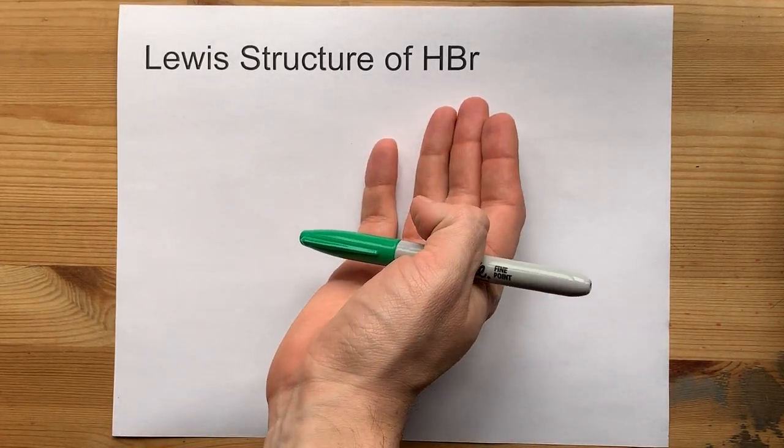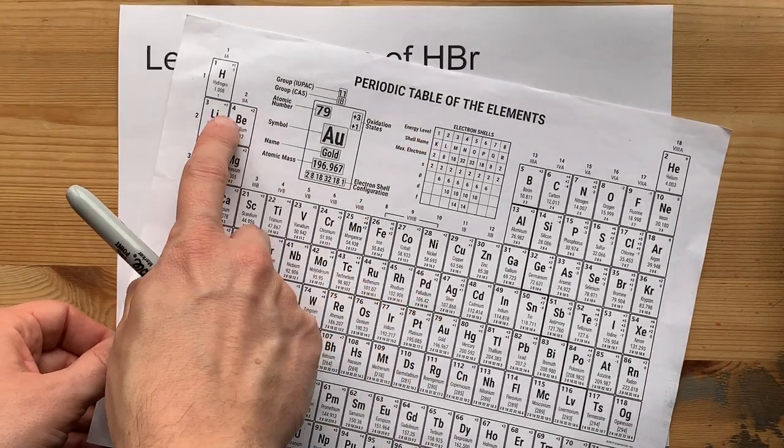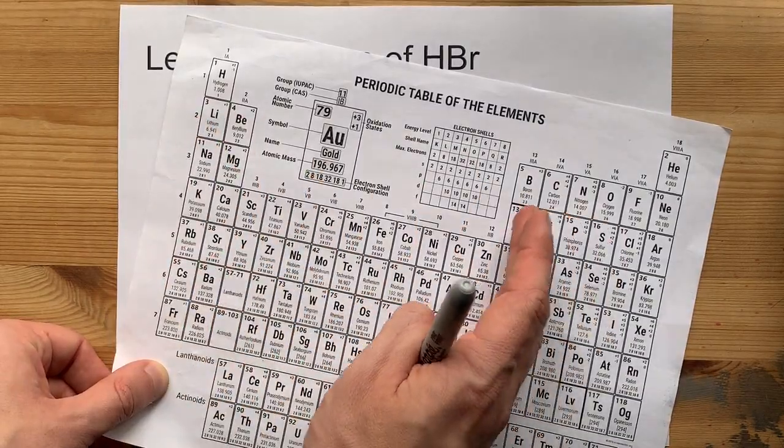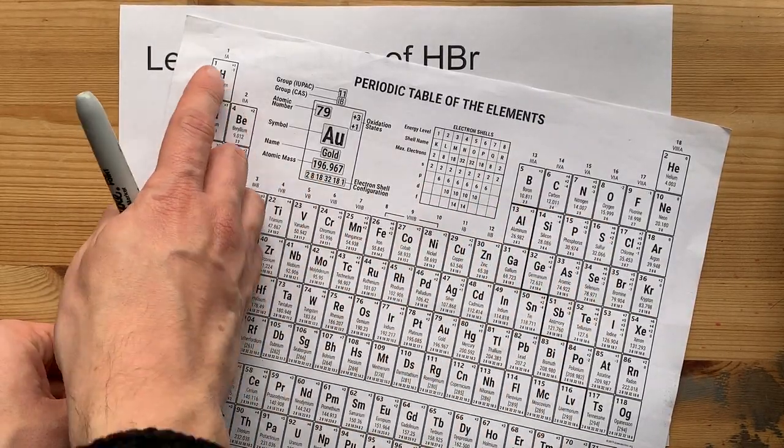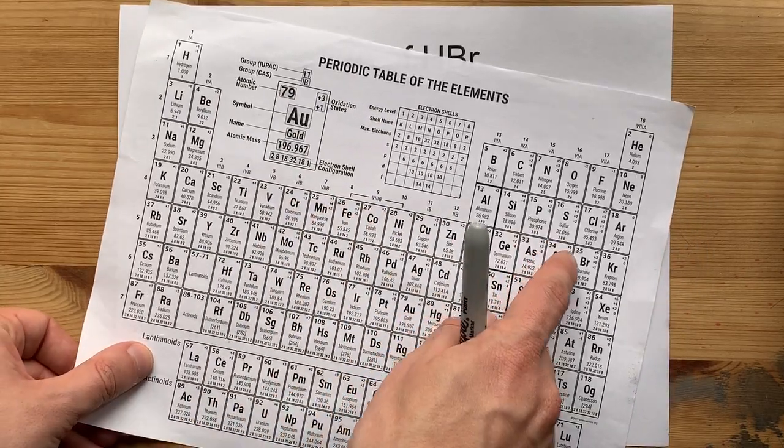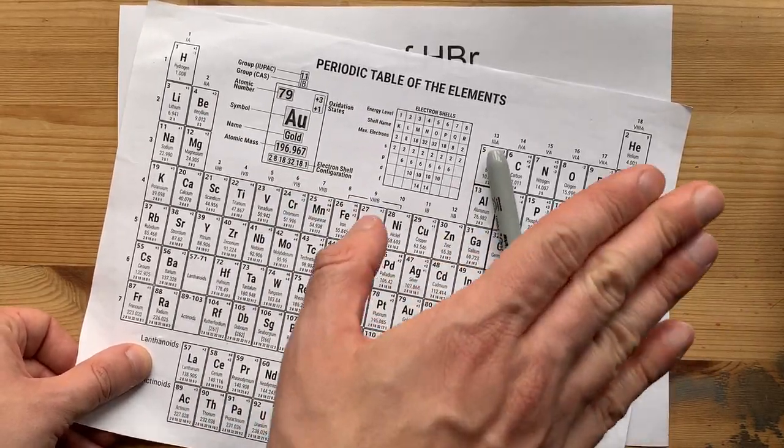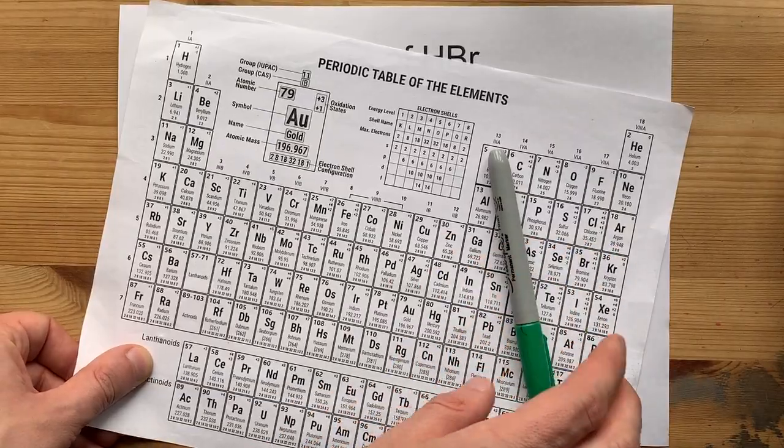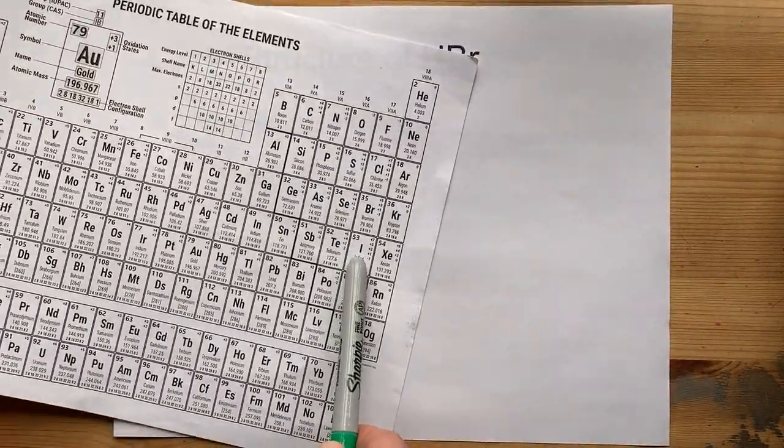Lewis structure of HBr. Hydrogen is a non-metal, even though it comes from the left side of the periodic table. It is a non-metal. You'll probably just have to memorize that. Bromine comes from the right-hand side of that staircase that's probably written on your table, and so it's also a non-metal.